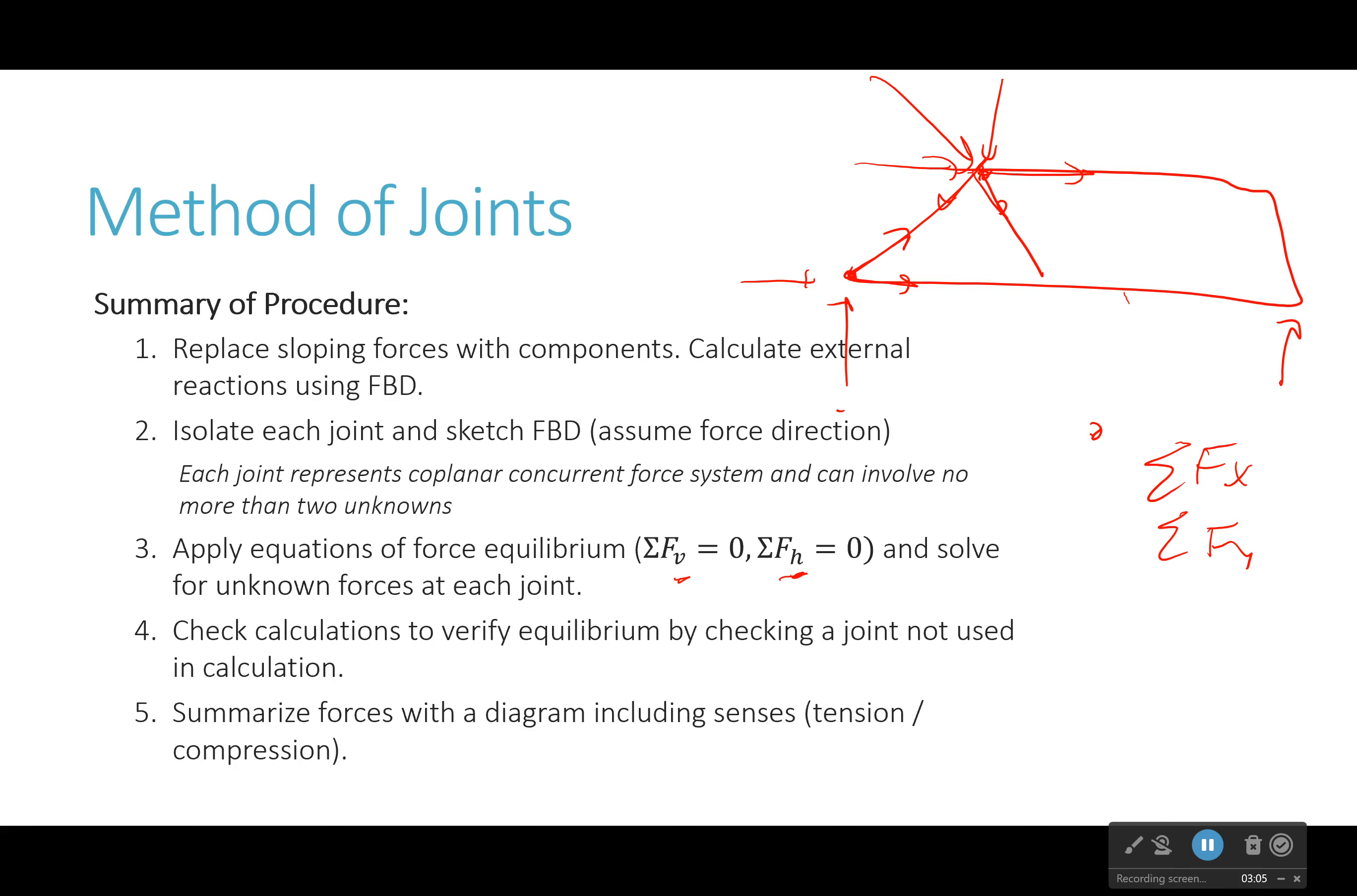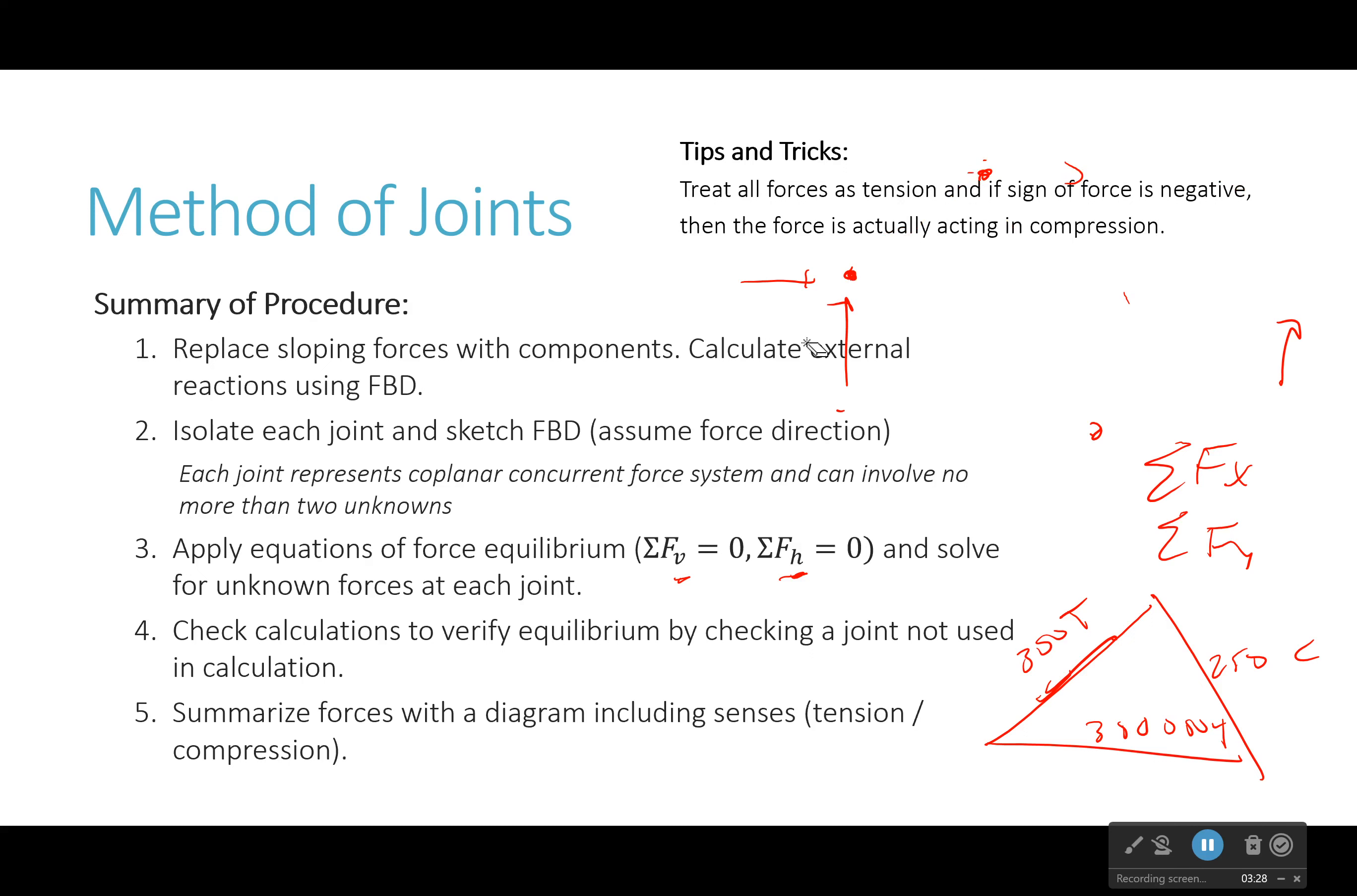Finally, if you want to, you can summarize with a force diagram, which would be where I just say like, this is 300 and that's in tension. That's 250 in compression. That's 300 thousand in tension, whatever. And you would show the joints, but with the forces right next to it. Now, I'm not going to leave you here. We're going to try out an example to help us really run through this.